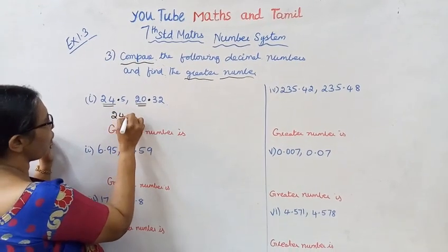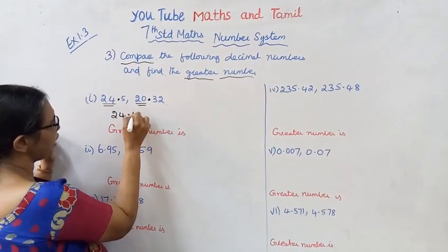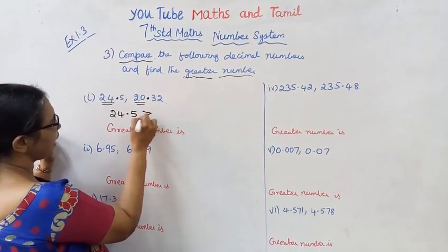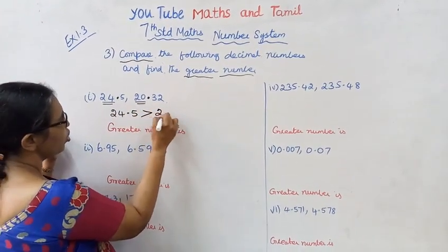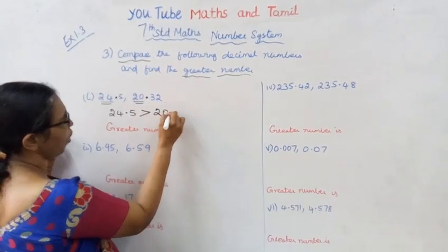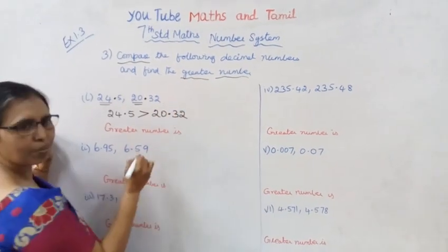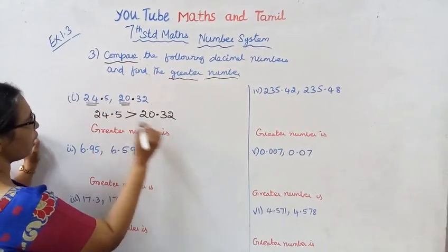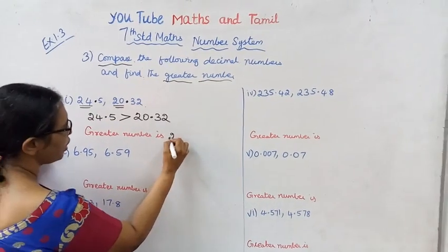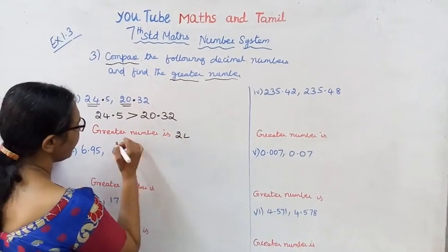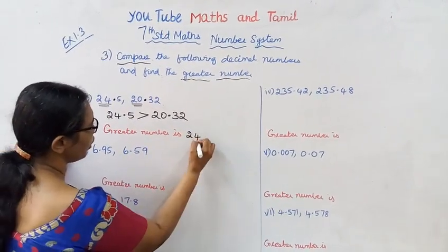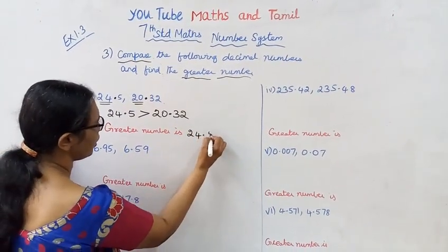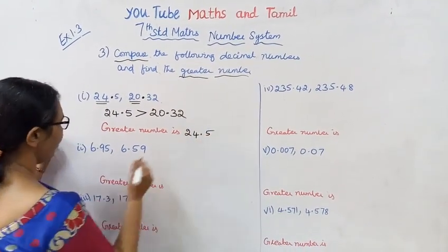24.5 is greater than 20.32. So the greater number is 24.5.